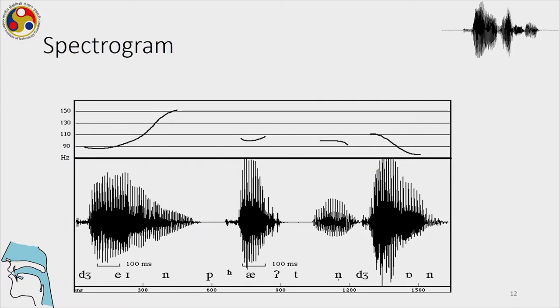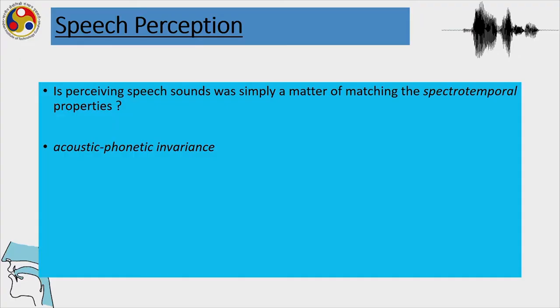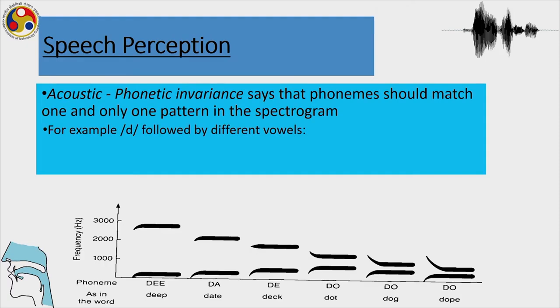Short-term spectrograms can give more information about harmonics and amplitude, whereas wideband spectrograms give more information about formants. Spectrograms are used for acoustic analysis and have been shown to reveal invariant acoustic cues. So is perceiving speech simply a matter of spectral properties and timing properties? Can acoustic phonetic invariants always determine perception? These diagrams show that acoustic phonetic invariants cannot always tell us about perceptual cues, because of the variability we already talked about.